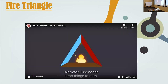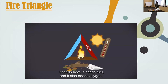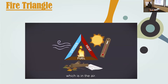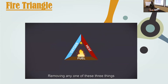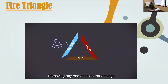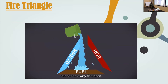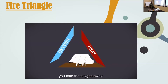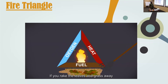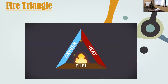Fire needs three things to burn: it needs heat, it needs fuel, and it also needs oxygen which is in the air. Fires burn when these three things come together. Removing any one of these three things will make the fire go out. If you add water, this takes away the heat. If you smother the fire with a fire blanket or pot lid, you take the oxygen away. If you rake the leaves and grass away, you remove the fuel and the fire will go out. This is the fire triangle.